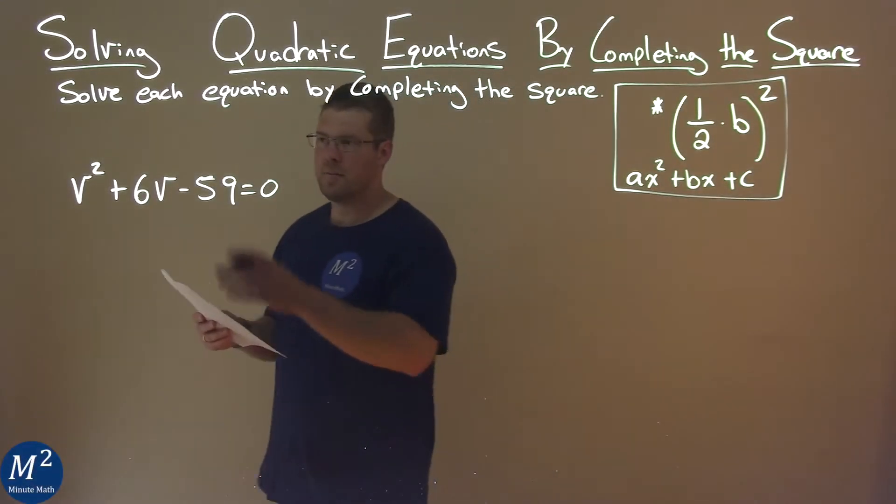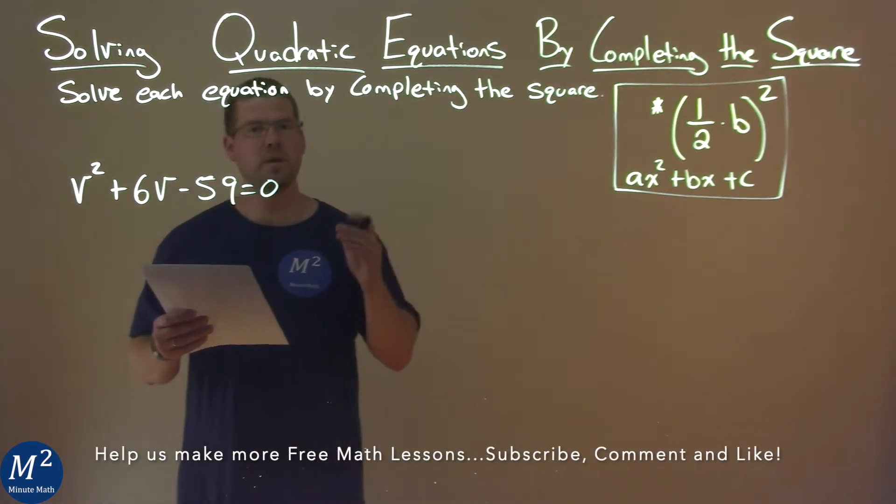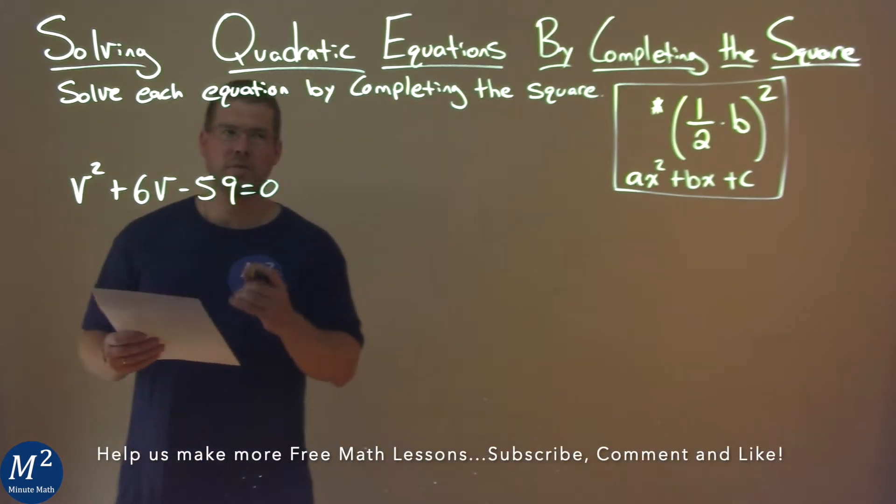We're given this problem: v² + 6v - 59 = 0, and we need to solve this by completing the square.